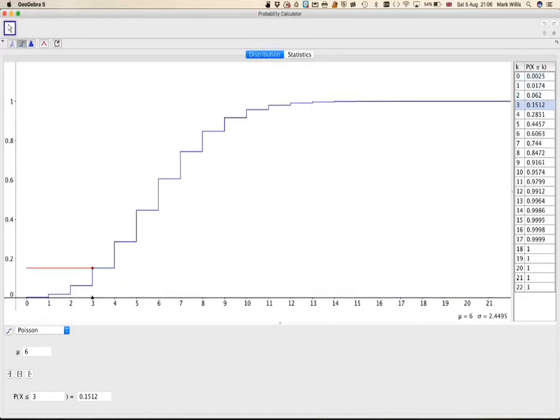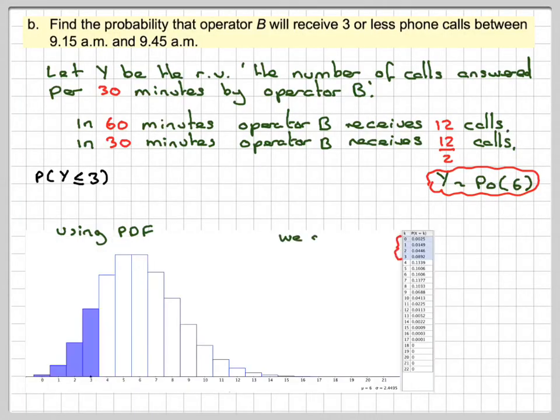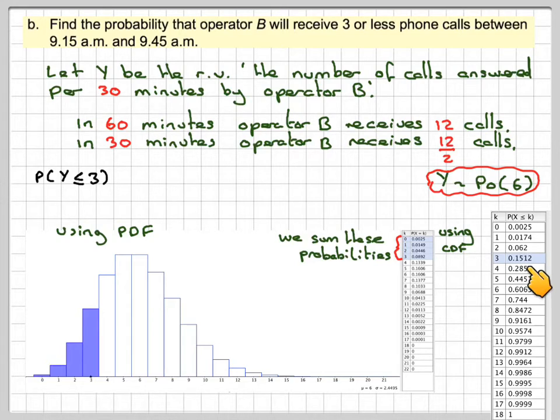Of course, it's better to use the CDF, which is 0.1512, and we'd round that off to 3 significant figures to get 0.151.